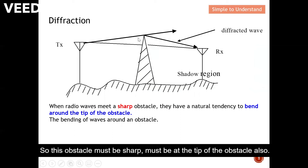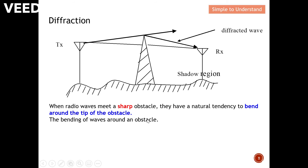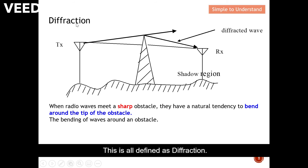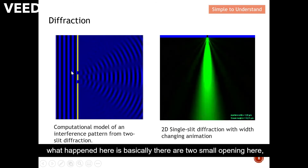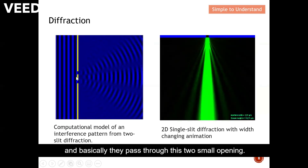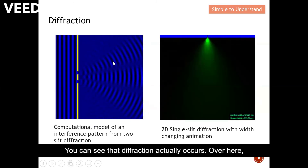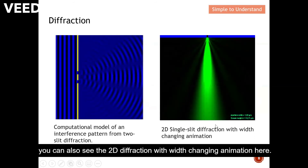Next, let's take a close look at what is diffraction. When a radio wave hits a sharp obstacle, the wave has a natural tendency to bend around the tips of the obstacle. So diffraction is also called the bending of waves around an obstacle. You can see here the electromagnetic wave propagates and passes through two small openings, and diffraction actually occurs.